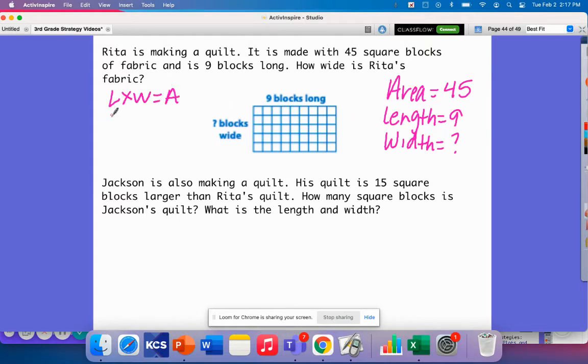If I know that length times width will give me my area, and I know my length is 9, so 9 times what would be 45? I can also think about this as a division problem. So 45 divided by 9 would be what as well. I do know that this will be 5 because I know 9 times 5 is 45 and I know that 45 divided by 9 is 5.